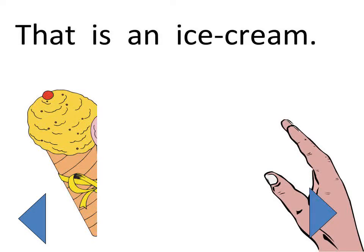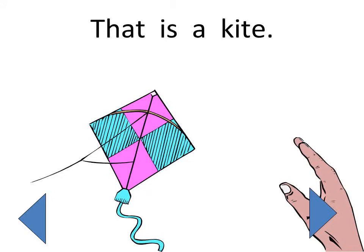Now ice cream is far. That is an ice cream. You like ice cream? Yeah, I also like ice creams. Now that is a kite. Kite is far from us. So that is a kite.